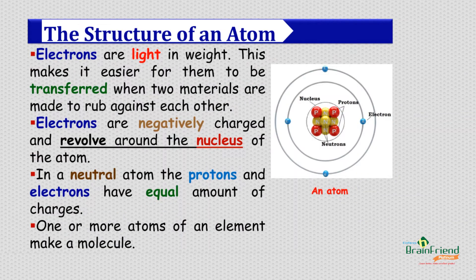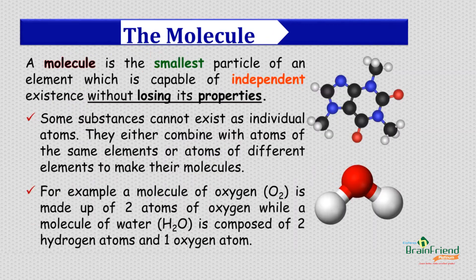On the other hand, electrons are light in weight and are negatively charged. This makes it very easy for electrons to transfer from one atom to another. It is important to note that, ordinarily, atoms are neutral. And for a neutral atom, the number of protons equals the number of electrons. One or more atoms of an element make up what we refer to as a molecule. A molecule is simply the smallest particle of an element that can exist independently without losing its properties.